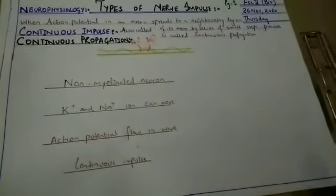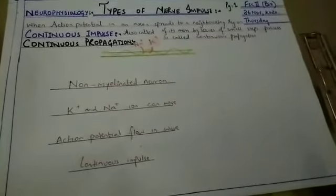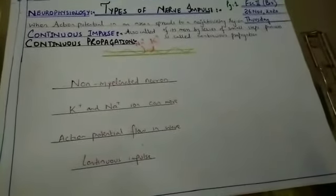So what is continuous? Continuous means के ऐसा neuron जो के non-myelinated है, उसमें क्या होगा? Continuous impulse होगी, continuous propagation होगी.